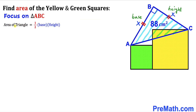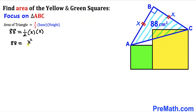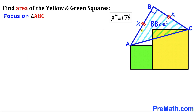Filling in the formula: 88 equals one-half times x times x. Simplifying, we get 88 equals x² divided by 2. Multiplying both sides by 2, the fraction is eliminated and x² turns out to be 176.